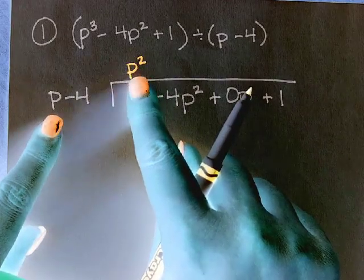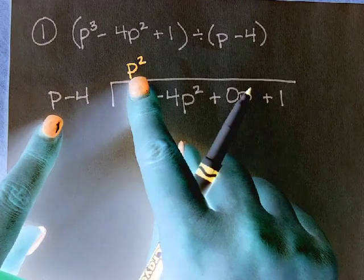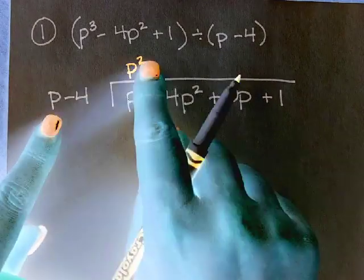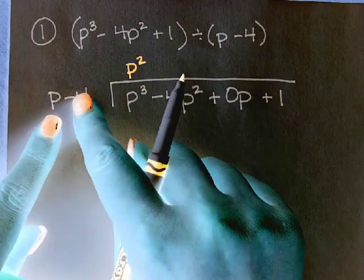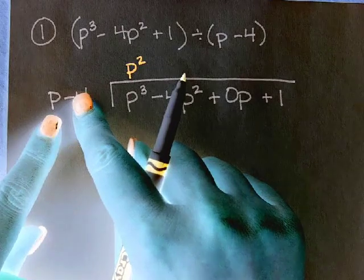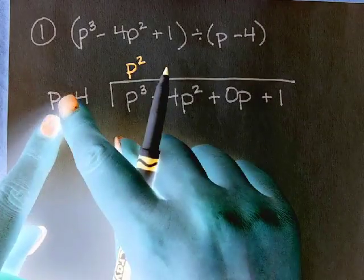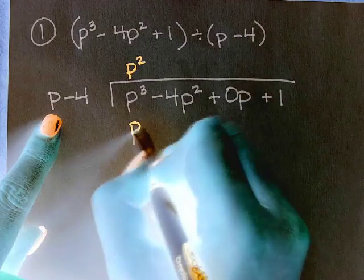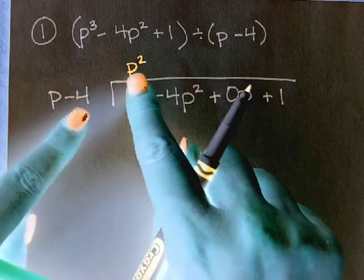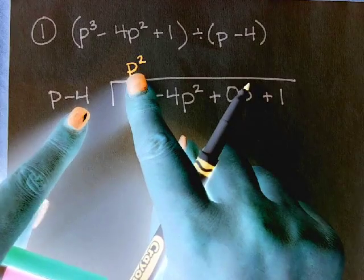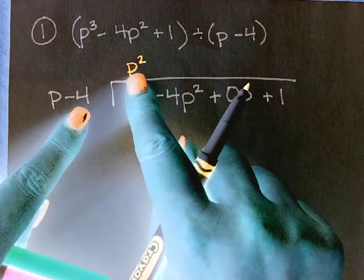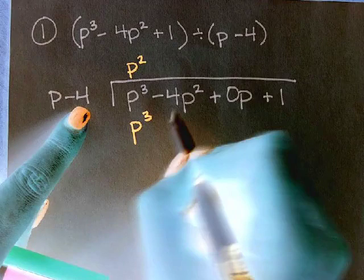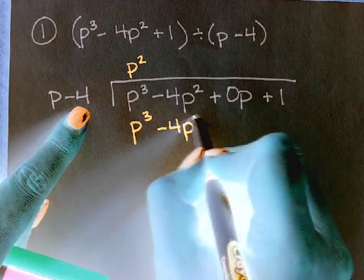So I take the P squared, and then what do I do? Multiply by each of the terms. Yes. So P squared times P. P cubed. That was long delay there. P squared times negative 4. Negative 4P squared.